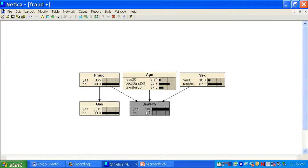Let's remove these findings, though. Let's say we find out jewelry has been purchased. The probability of fraud went up to 0.065. It became more likely.